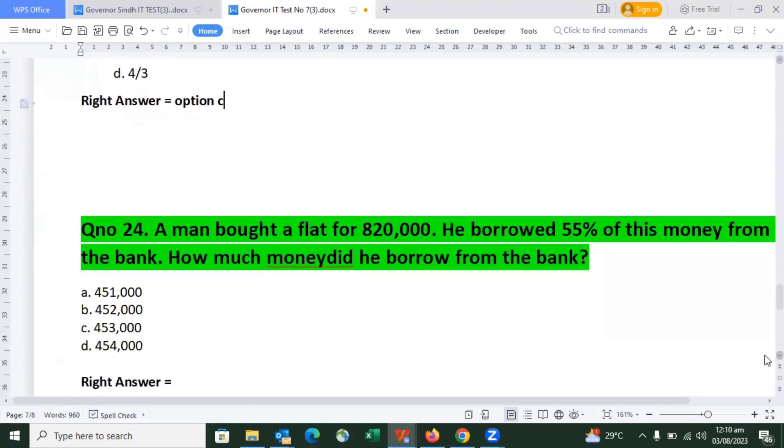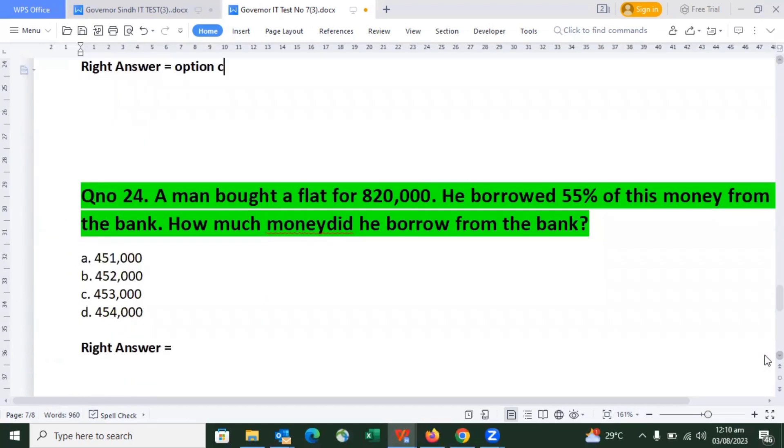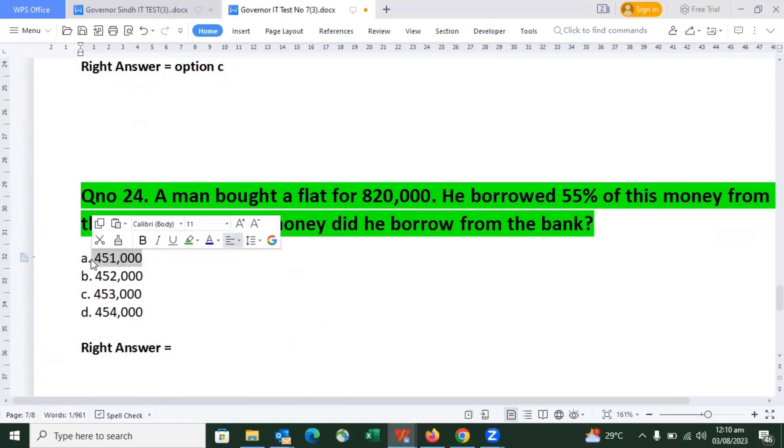Next question: A man bought a flat for Rs. 8,20,000. He borrows 55% of this money from a bank. How much money did he borrow from the bank? The right answer is Rs. 4,51,000, which is option B.